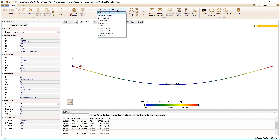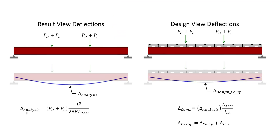Switching to the result view, we can see the analysis results for the various load combinations. The deflections for the non-construction dead, live, and dead-plus-live cases appear large since they were computed using the moment of inertia of the non-composite beam. Prior to performing the deflection checks, these results will be scaled by the ratio of the beam's moment of inertia to the lower bound moment of inertia to account for the composite stiffness of the beam and slab system. These scaled composite deflection results will be added to the permanent pre-construction deflection results to produce the total deflection. Note that in the result view, Visual Analysis does not know that the beam is composite, so the deflections are not adjusted to account for composite action; those are only visible in the design view and design report.